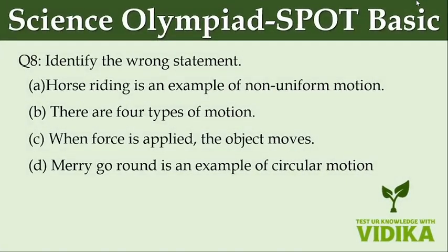Identify the wrong statement. Option A, horse riding is an example of non-uniform motion. Option B, there are four types of motion. Option C, when force is applied the object moves. Option D, merry-go-round is an example of circular motion.